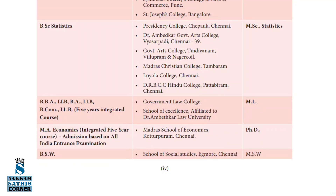Further options include LLM, which is Master of Law, and MA Economics through institutions like Madras School of Economics. You can also pursue a PhD. BSW, which stands for Bachelor of Social Work, is offered through schools of social studies, and further studies include MSW, Master of Social Work.